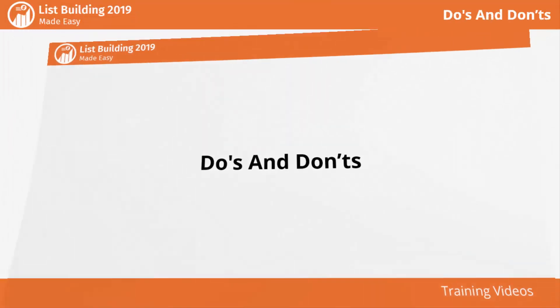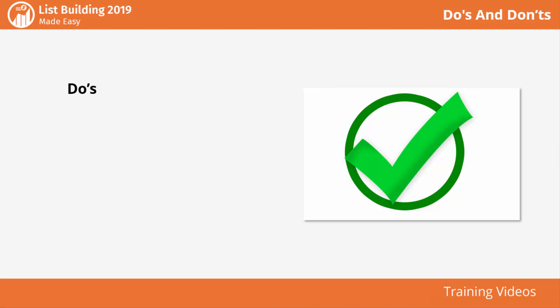Do's and don'ts. Do's: Keep signup forms simple — reduce your signup forms to two fields: name and email address. You can always ask for more information once you engage with subscribers. Send welcome emails to keep your business top of mind by sending them to email subscribers right after they sign up.